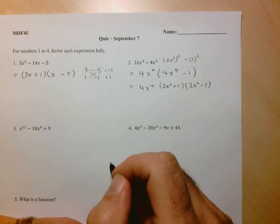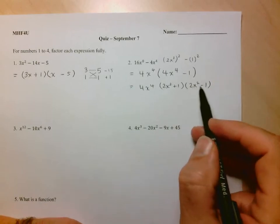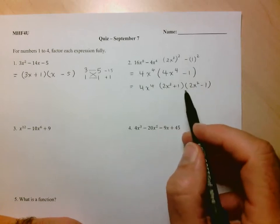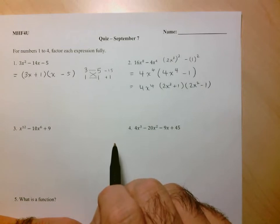So 4x to the 4, and the factorization of any difference of squares is just the first plus the second times the first minus the second. So, 2x squared plus 1, and 2x squared minus 1.